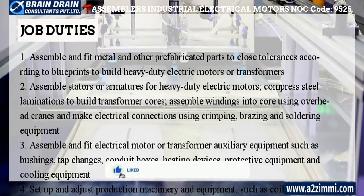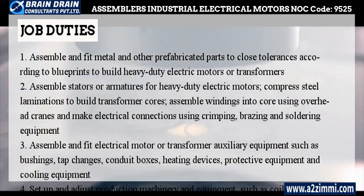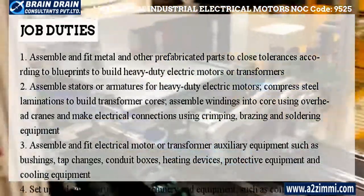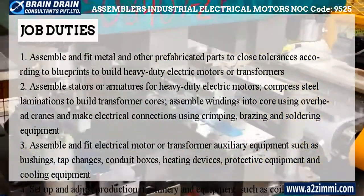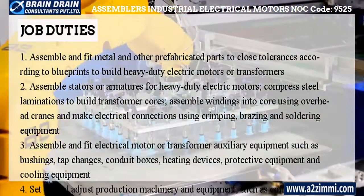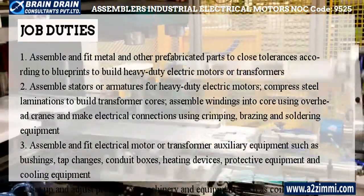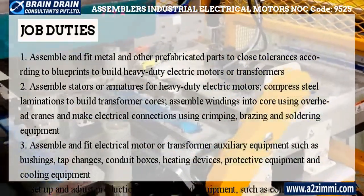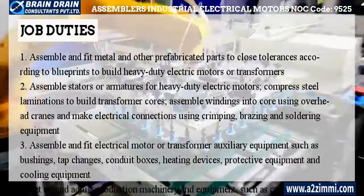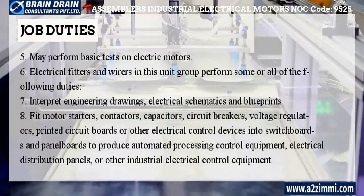Main job duties of Assemblers, Fabricators, and Inspectors, Industrial Electrical Motors and Transformers are as follows. Assemble and fit metal and other prefabricated parts to close tolerances according to blueprints to build heavy-duty electric motors or transformers. Assemble stators or armatures for heavy-duty electric motors, compress steel laminations to build transformer cores, assemble windings and decor using overhead cranes, and make electrical connections using crimping, brazing, and soldering equipment. Assemble and fit electrical motor or transformer auxiliary equipment such as bushings, tap changers, conduit boxes, heating devices, protective equipment, and cooling equipment. Set up and adjust production machinery and equipment, such as coil winding machines, for the manufacture of heavy-duty electrical equipment. May perform basic tests on electric motors.